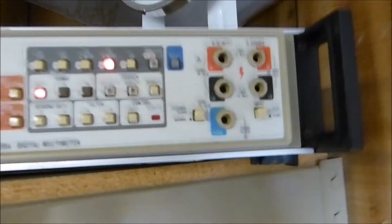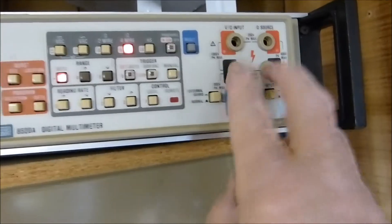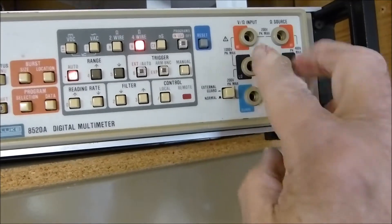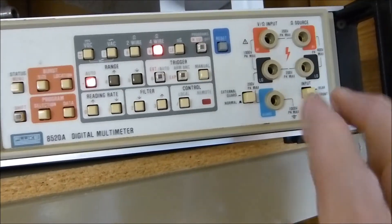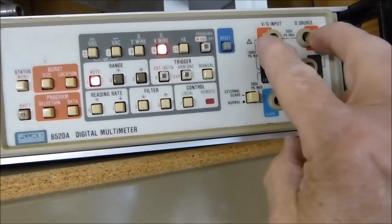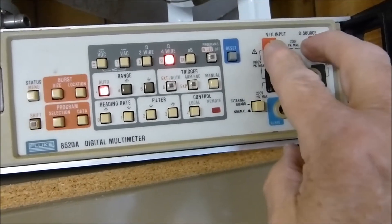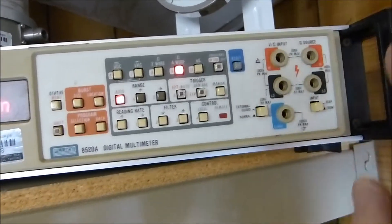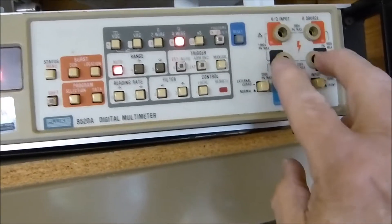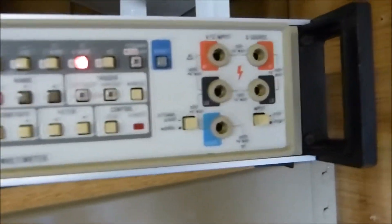Effectively what you're doing is you're running two black wires - I'm calling them black because these are black - over to one side of your resistor, and then these two red wires you run over to the other side of your resistor.